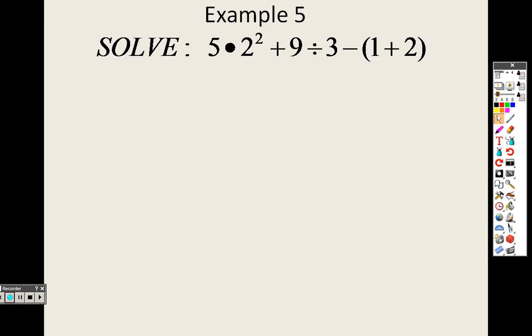When we go to solve this, this is all about order of operations. We have to do please excuse my dear aunt Sally, which means P is first for parentheses. So anything that's in parentheses I need to do first. And that is 1 plus 2. So 1 plus 2 is 3.